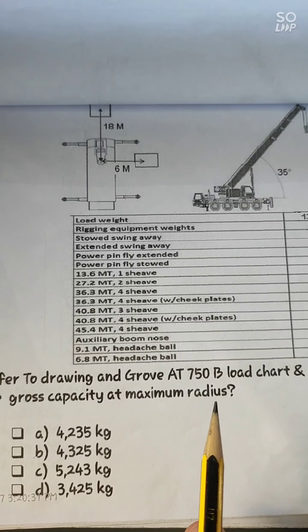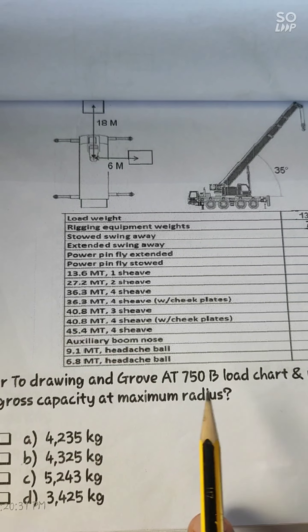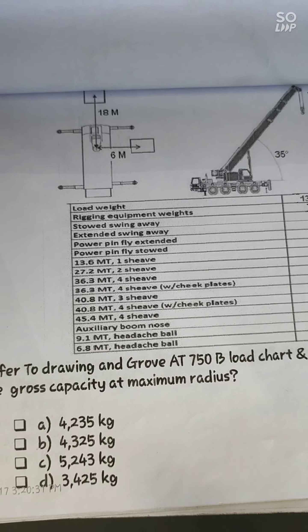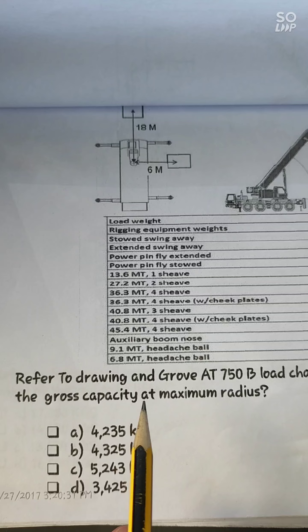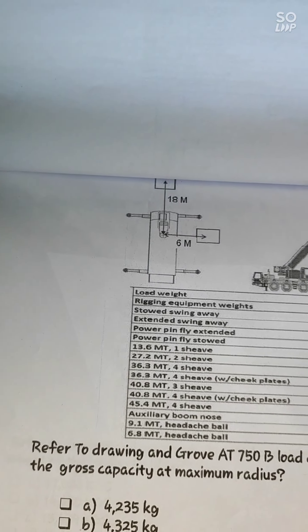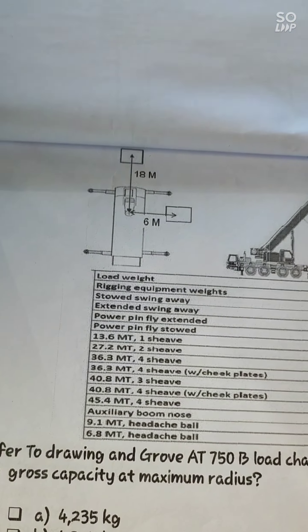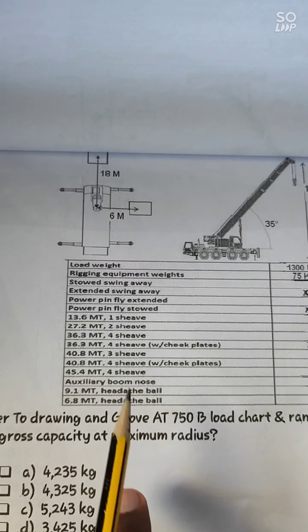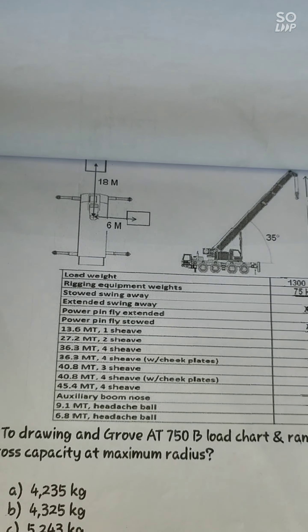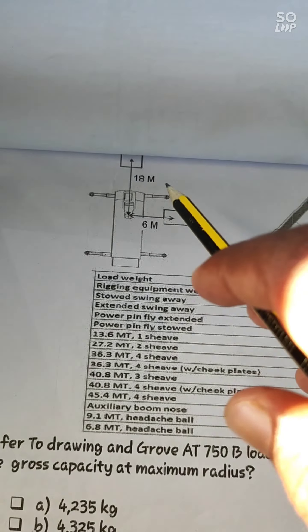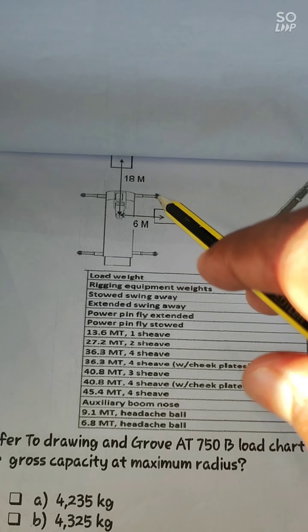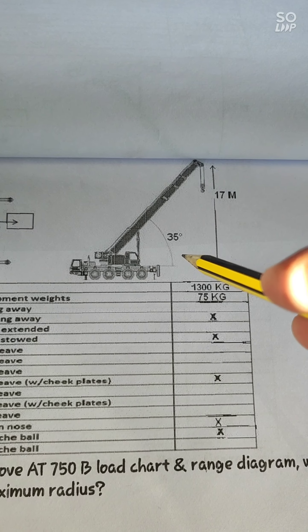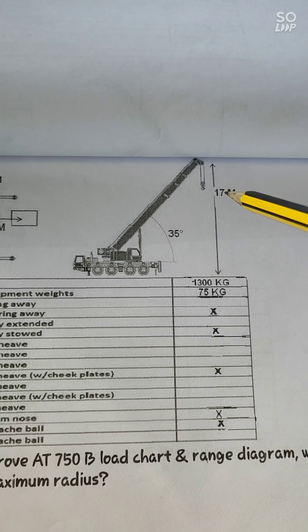The crane in question is the Grove 8750B model. The question asks: What is the Gross Capacity at Maximum Radius? We need to find the gross capacity from the boom length. The question specifies Maximum Radius. Here we have two radiuses: 18m and 6m, with an angle of 35 degrees and a tip height of 17m.